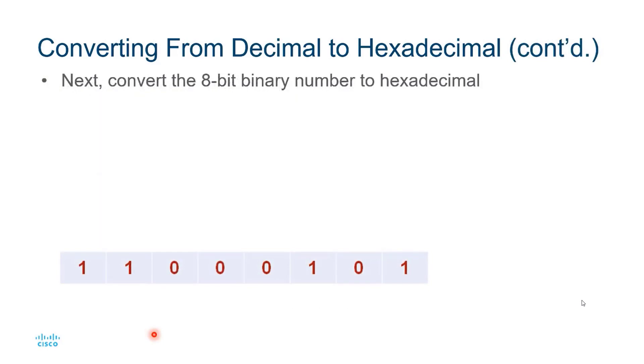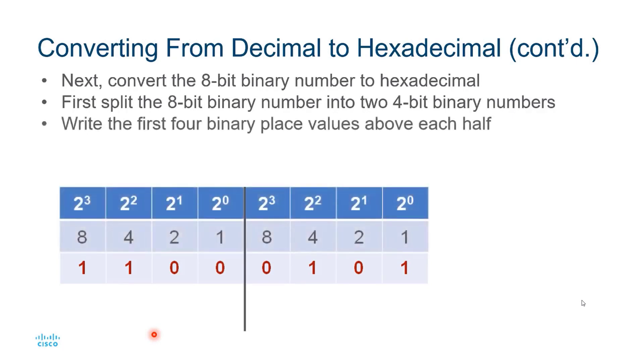Next, I'll convert the 8-bit binary number to hexadecimal by first splitting it into two 4-bit binary numbers. And then I'll rewrite the first 4 binary place values above each half. So here I have 1, 2, 4, 8, and then repeat it on the left, 1, 2, 4, 8.